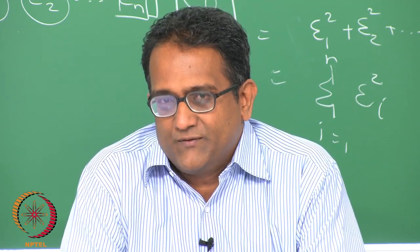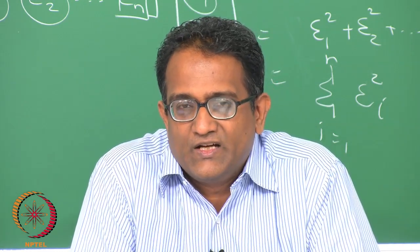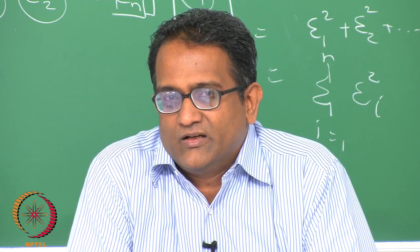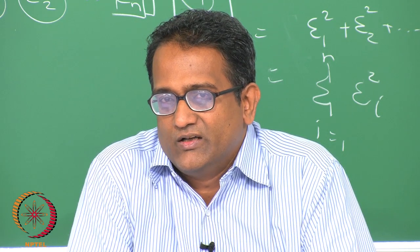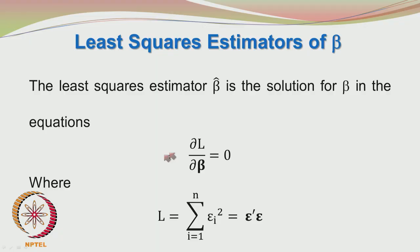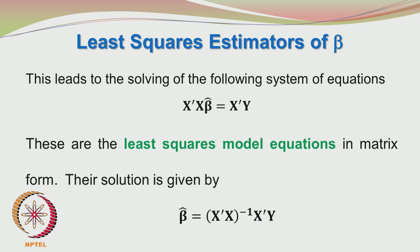We have Σεᵢ² which may be written in matrix notation as ε'ε. We want to minimize the sum of the square of the deviations — this is the good old least squares principle. In matrix notation, after setting ∂L/∂β = 0, the result is: X'X β̂ = X'Y, or equivalently β̂ = (X'X)⁻¹X'Y. This is a very famous equation.